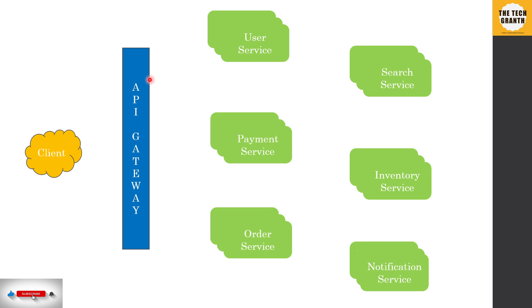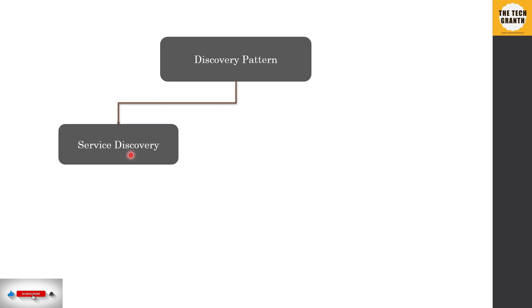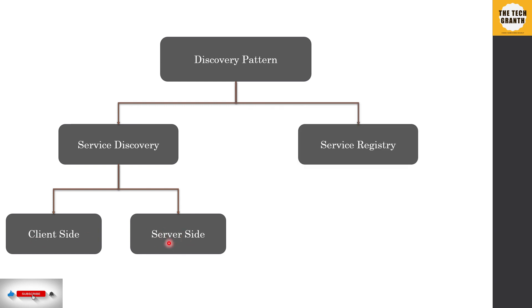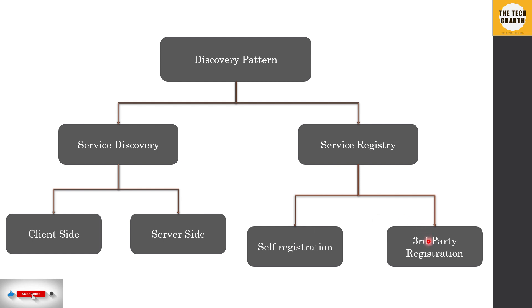We'll talk about how service discovery works, the different pattern types involved, and how each service registers itself with a service registry. We'll cover how a load balancer, API gateway, or client picks up the URL and port from the service registry. There are two patterns: service discovery (with client-side and server-side variants) and service registry (with self-registration and third-party registration).